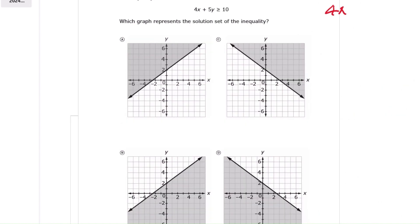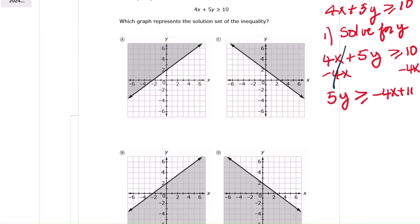Question 3. We are graphing the inequality 4x plus 5y is greater than or equal to 10. First, we need to solve for y. Subtract 4x from both sides, and we get 5y equals negative 4x plus 10. Now divide both sides by 5, and we get y is greater than or equal to negative 4 fifths x plus 2.